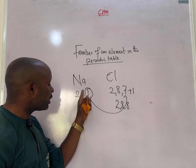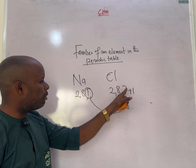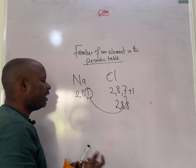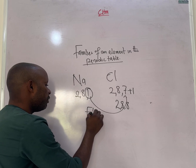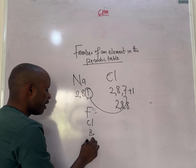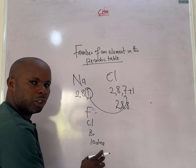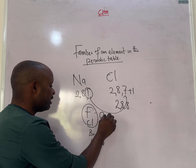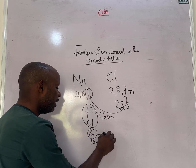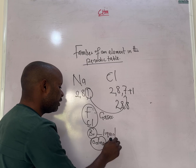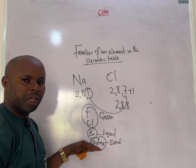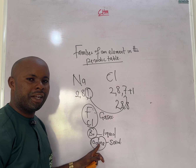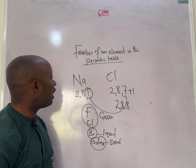Chlorine needs one electron to be stable, while sodium is also not stable with its extra electron. So when they come together they react vigorously. The group seven halogens — fluorine, chlorine, bromine, and iodine — show a group trend: fluorine and chlorine are gases, bromine is liquid, and iodine is solid. Their reactivity decreases down the group: fluorine is most reactive, then chlorine, bromine, and iodine.